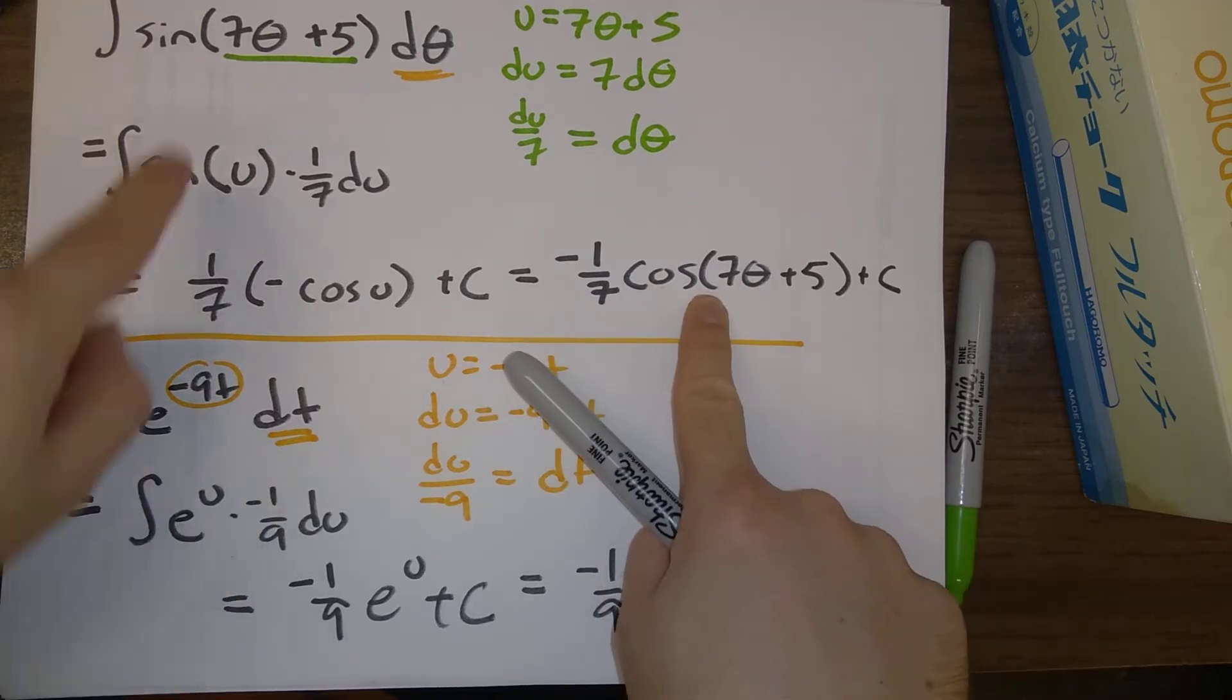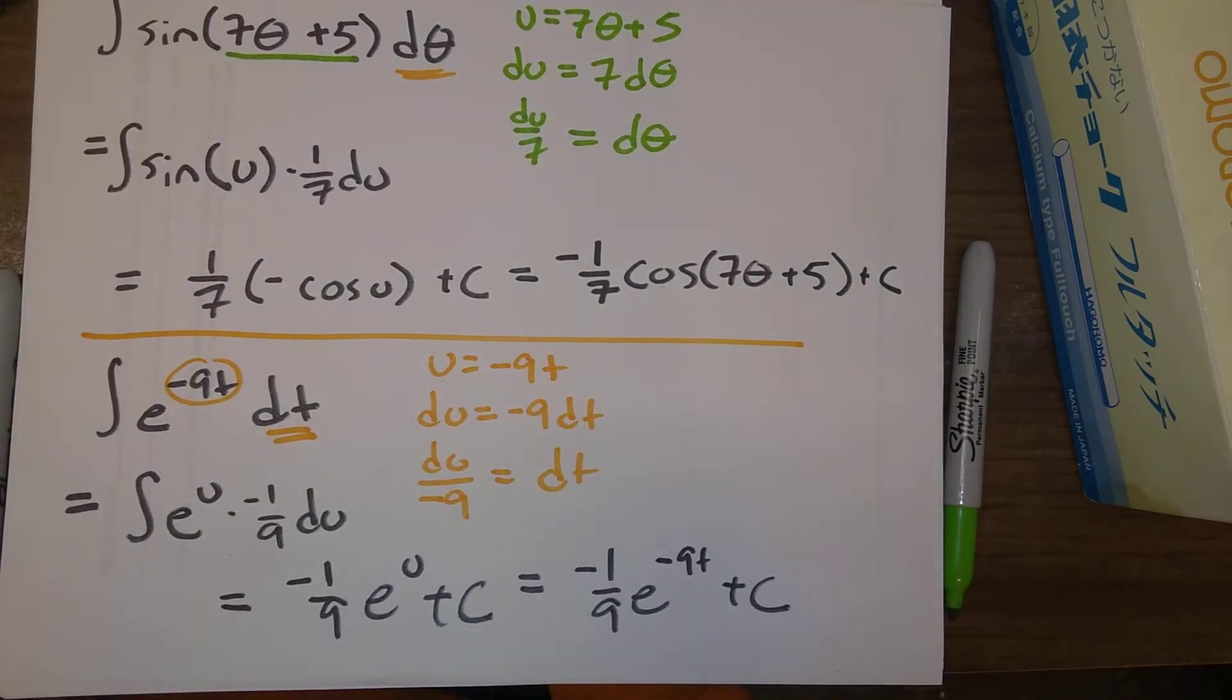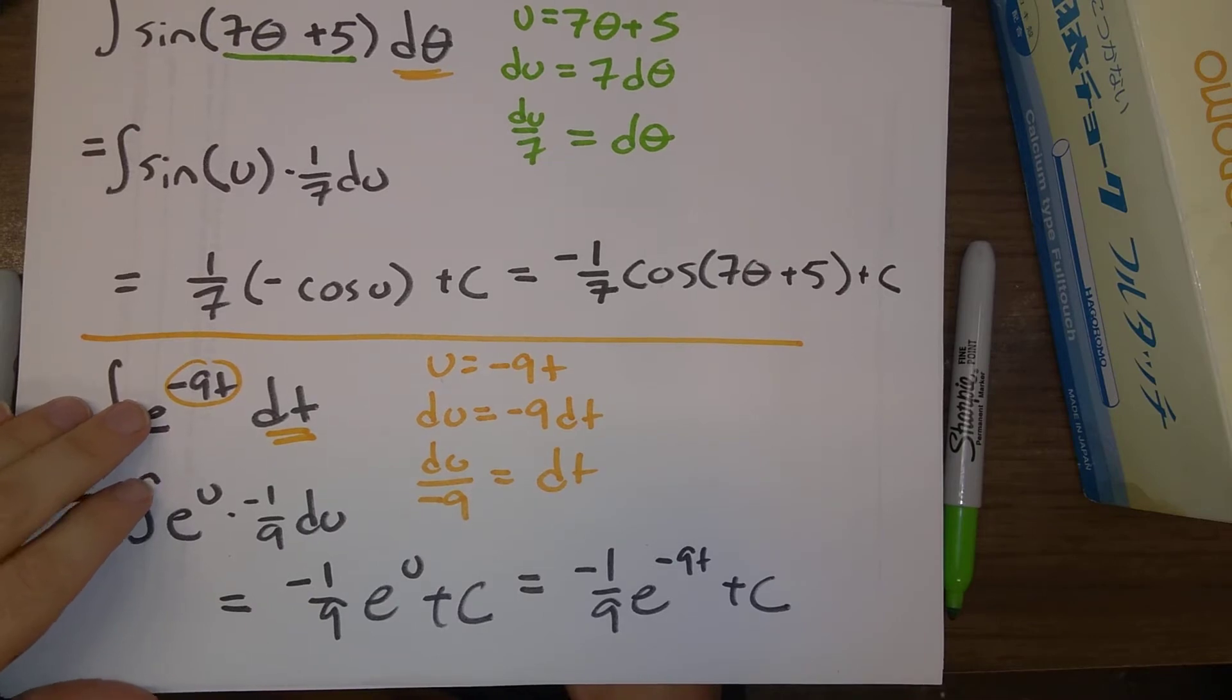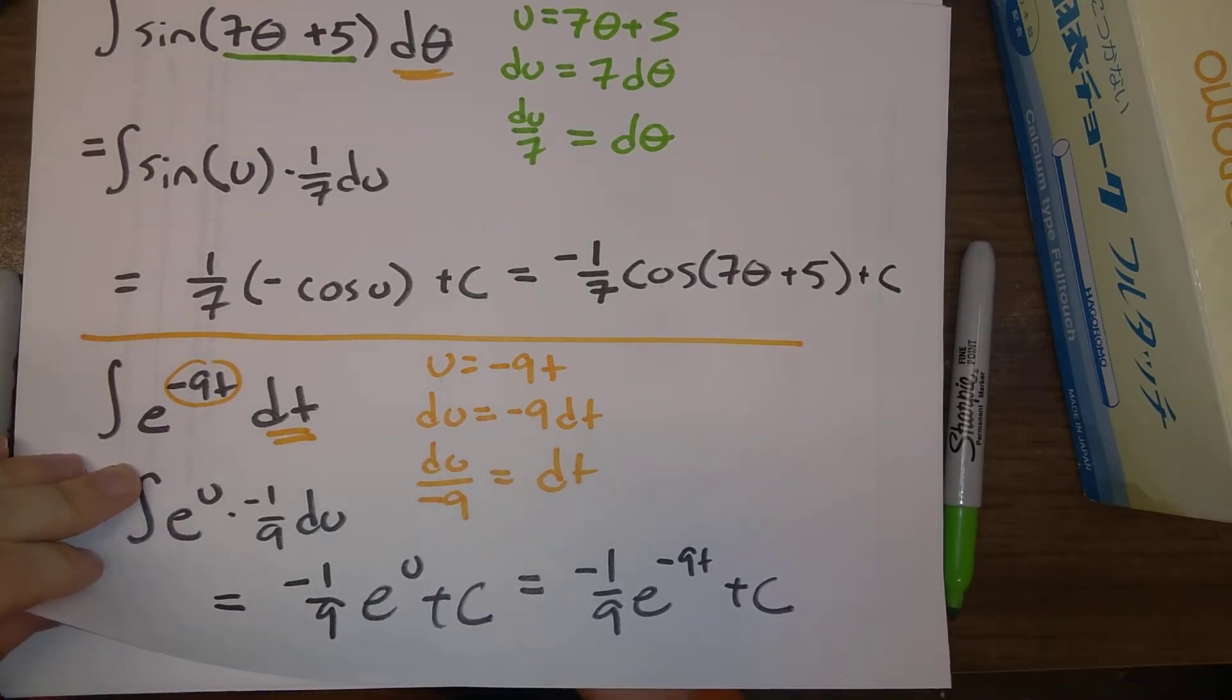And similarly, take the derivative of this, you get back up to the integral of 7, you get back up to 7 sine, or sorry, sine of 7 theta plus 5. Once again, when you're finding antiderivatives, in some sense, we should never be wrong, because we can always check our work.